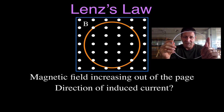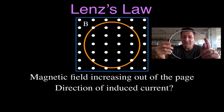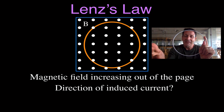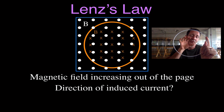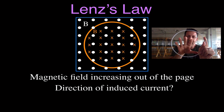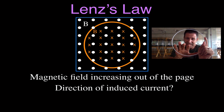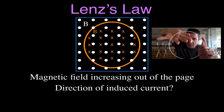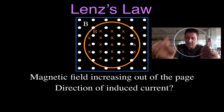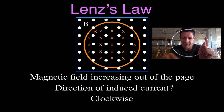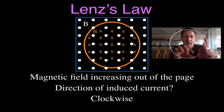The first case: we have magnetic field pointing out of the page and the magnetic field strength is increasing. So — magnetic field increasing out of the page — we want to know the direction of the induced current. If the magnetic field is getting stronger out of the page, the coil is going to produce a current that opposes that change. To oppose more coming out, it's going to produce magnetic field that goes into the page. Using the right-hand rule, point fingers into the page — the thumb points in the clockwise direction. So the induced current is in the clockwise direction.